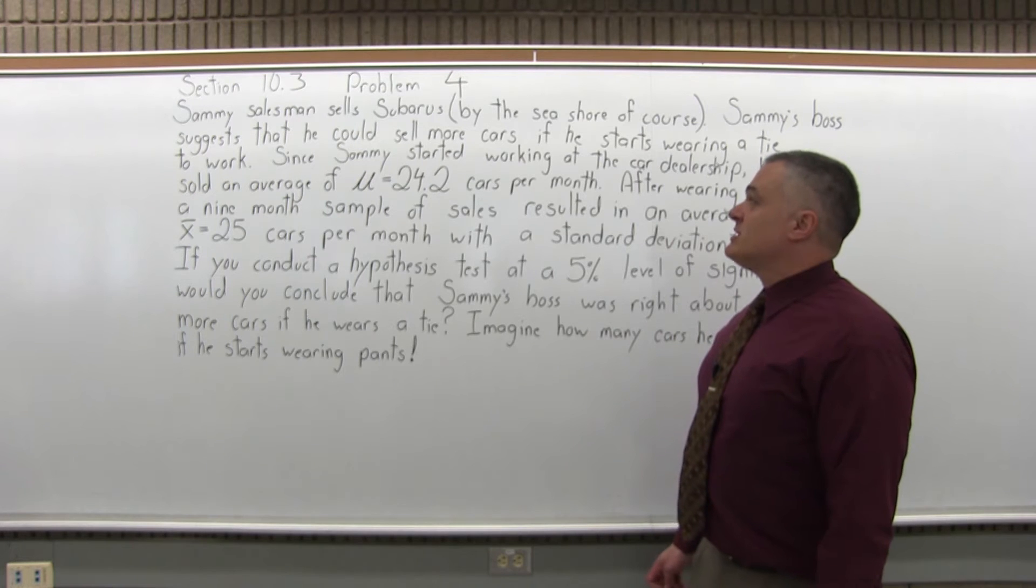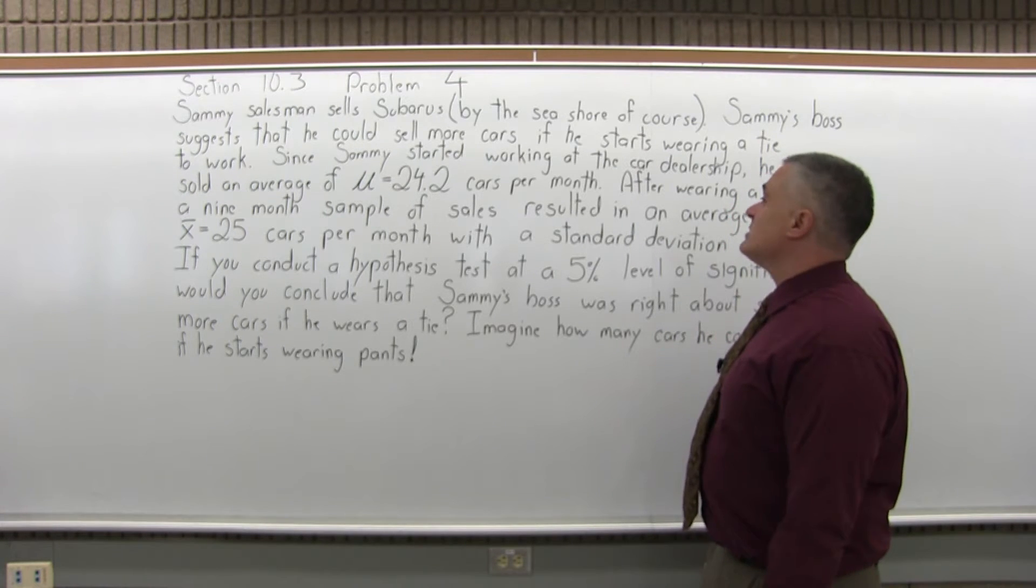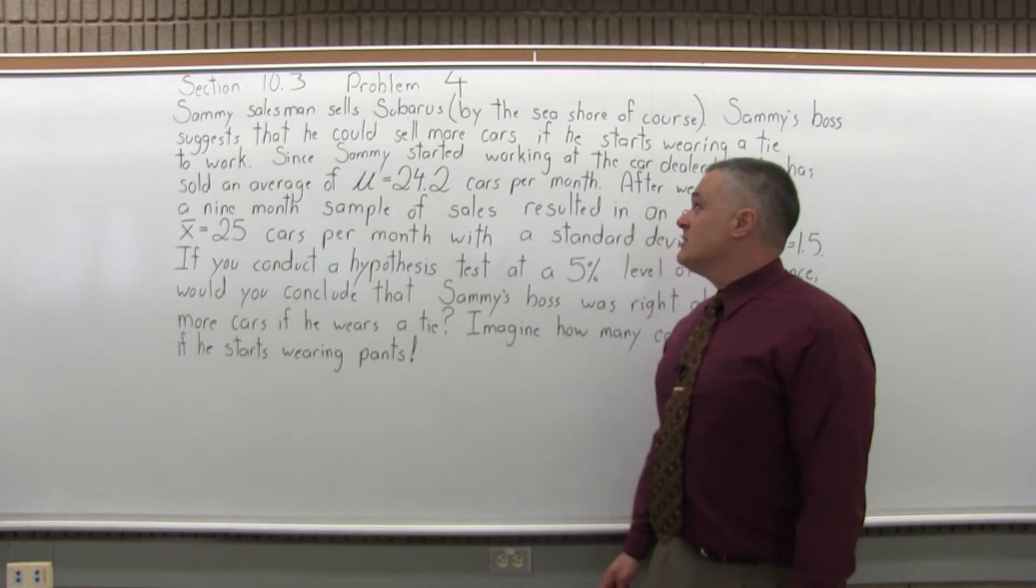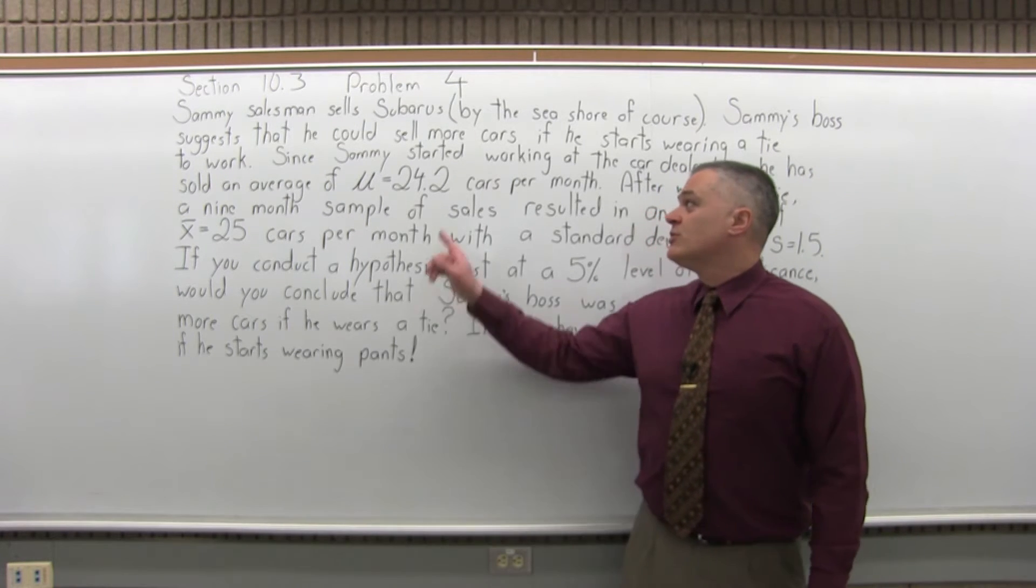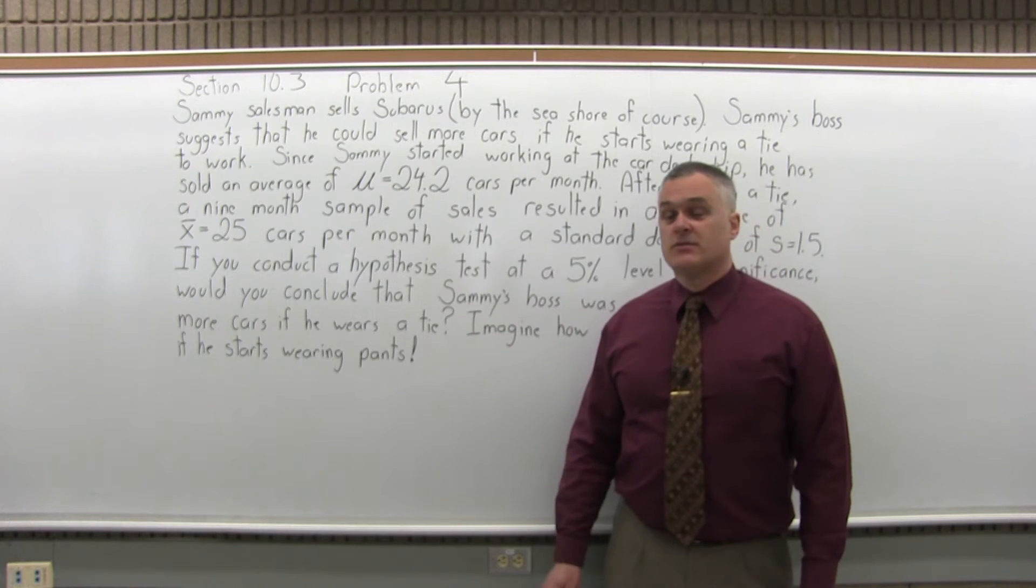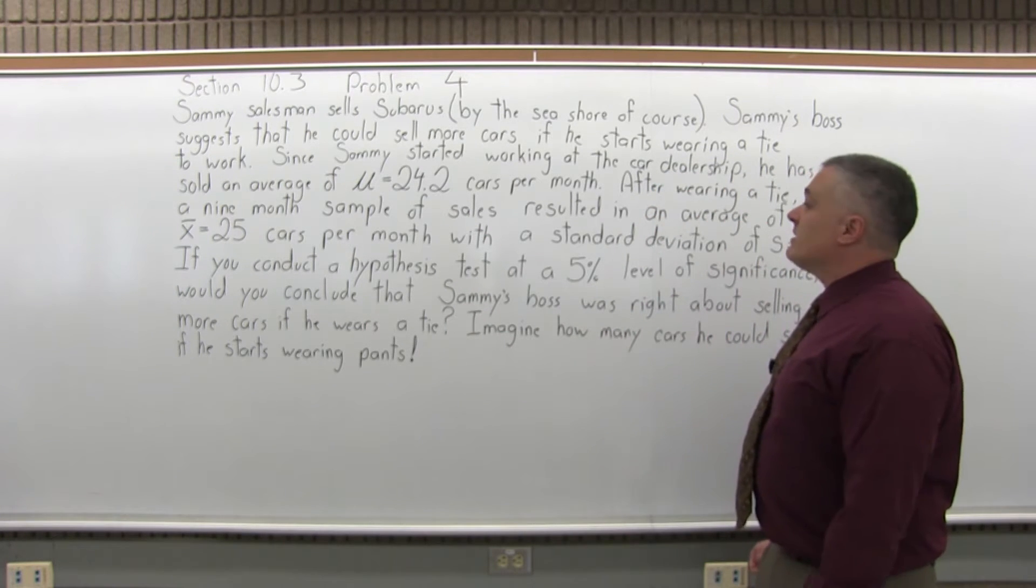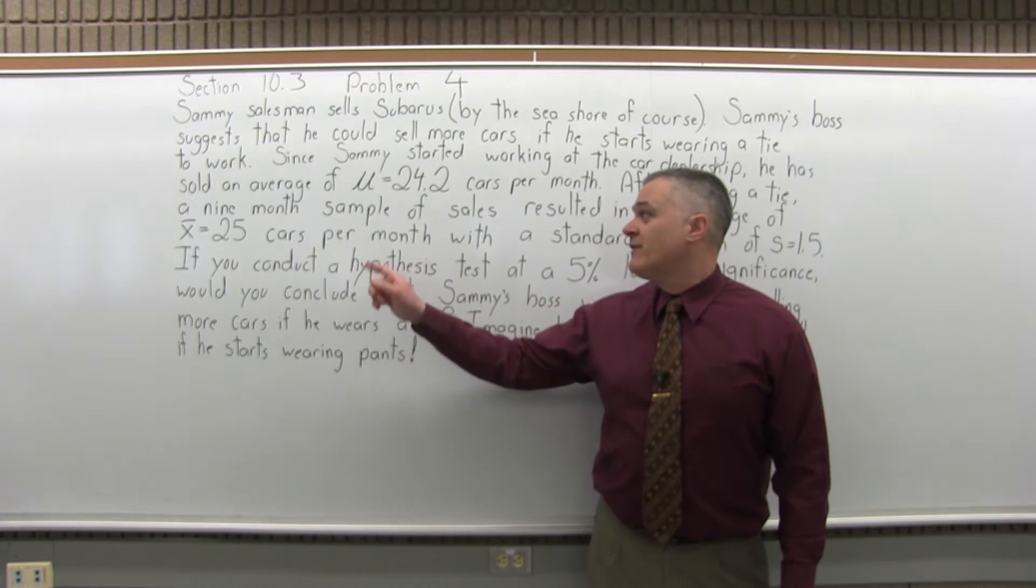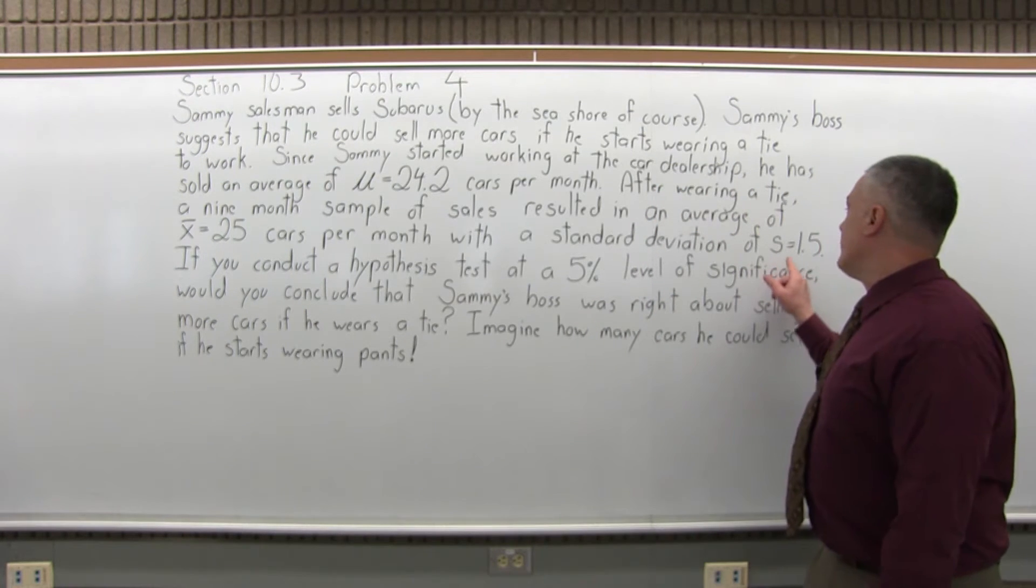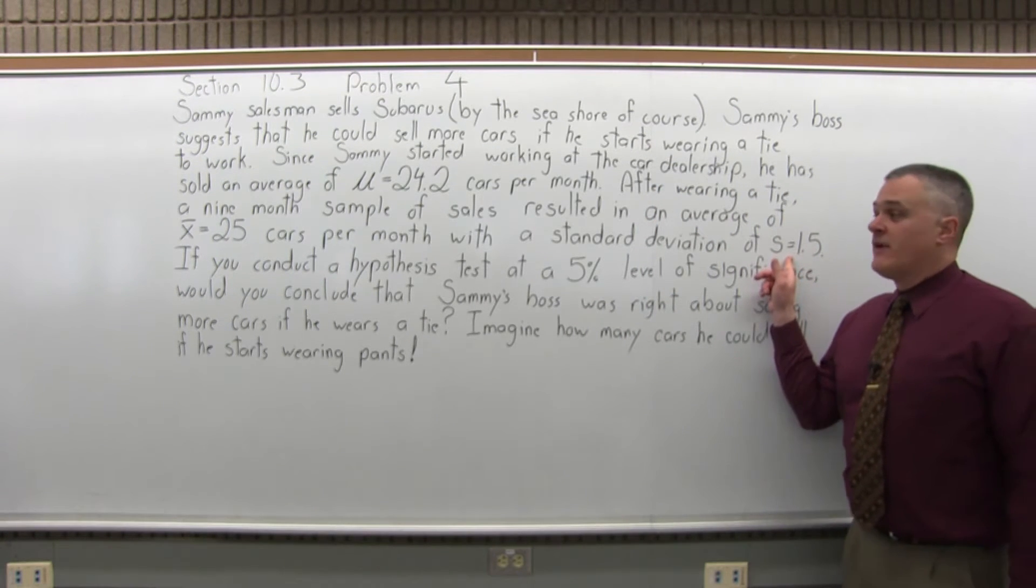Sammy's boss suggested he could sell more cars if he starts wearing a tie to work. Since Sammy started working at the car dealership, he has sold an average of mu equal to 24.2 cars per month. After wearing a tie for a nine-month sample of sales resulted in an average of X bar equal to 25 cars per month, with a standard deviation of S equal to 1.5.